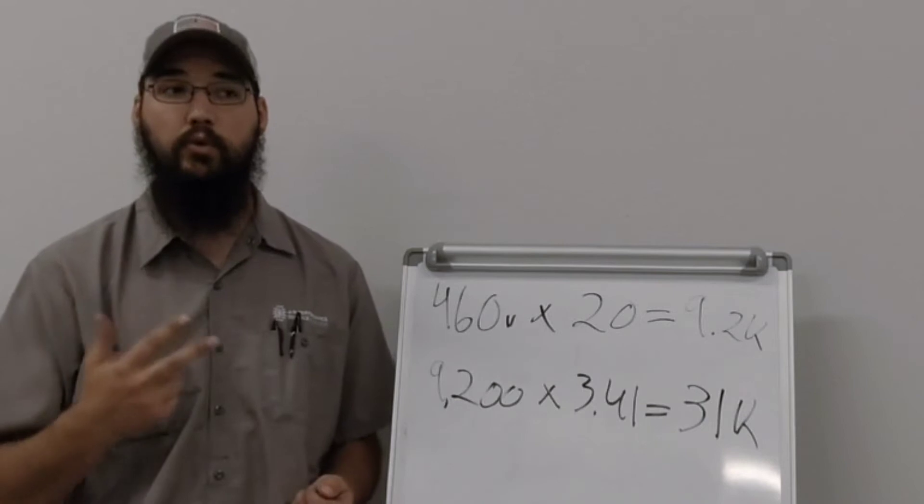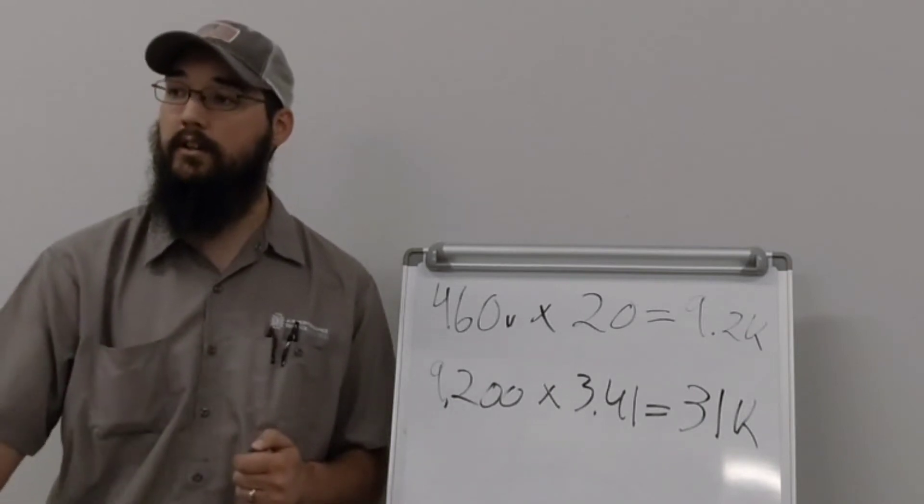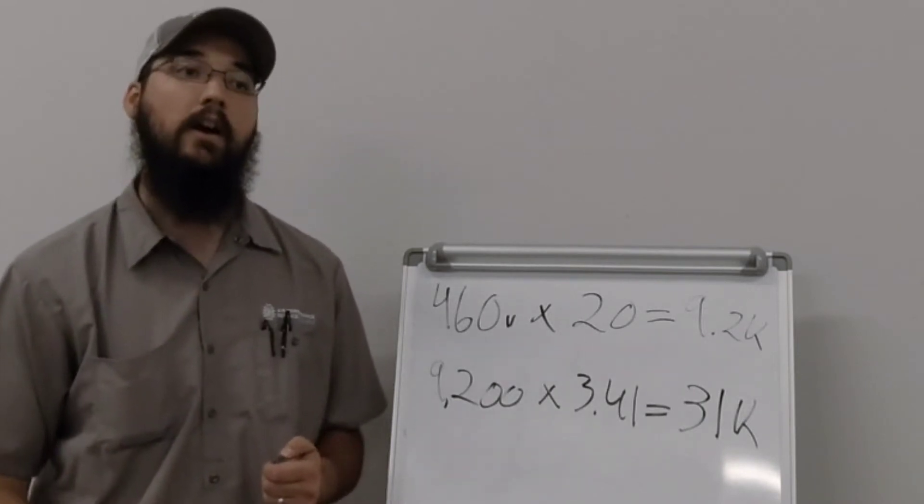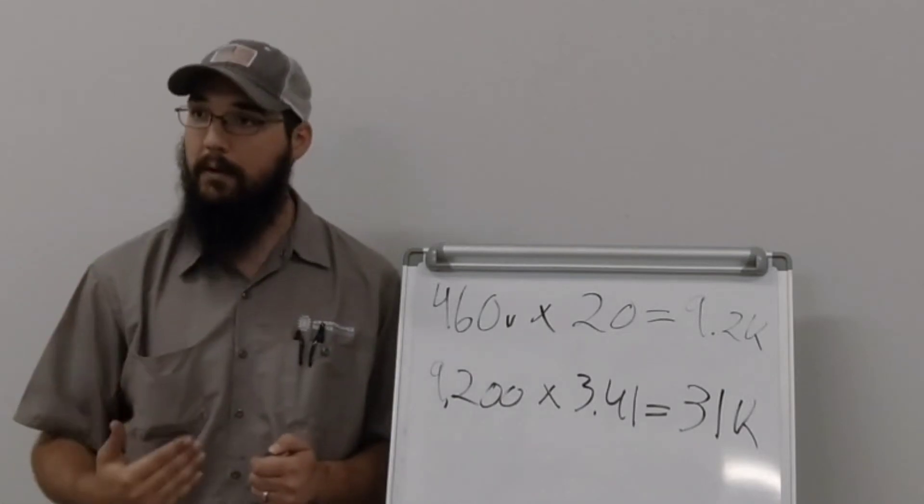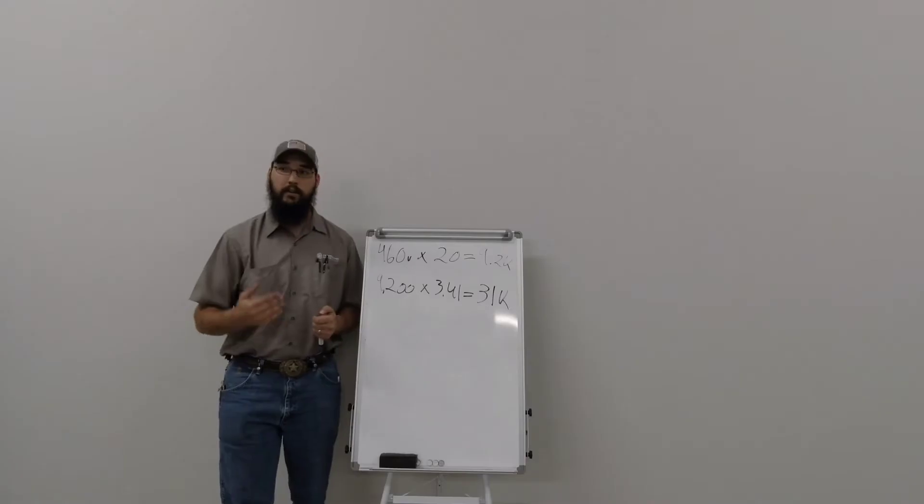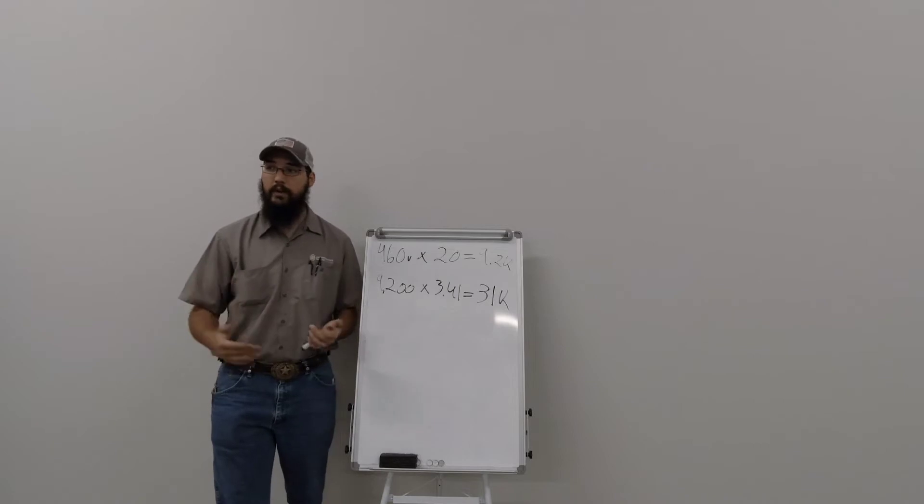Two tons of cooling has to be factored into the condenser as additional cooling required, on top of what the evaporator capacity is. So if the evaporator is doing 20 tons of cooling, that condenser has got to do 22.